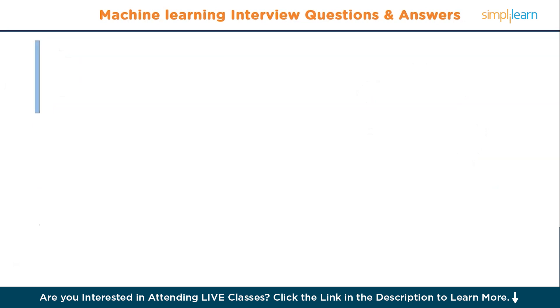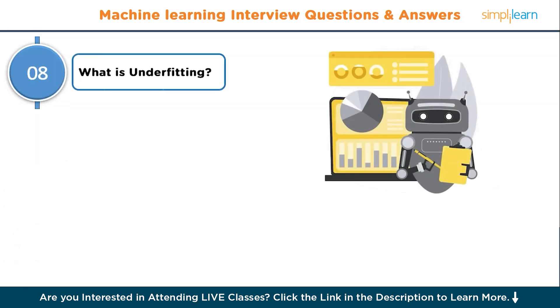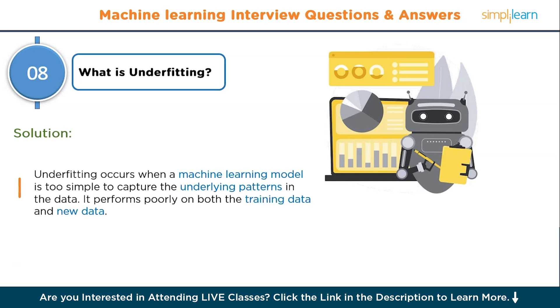Coming to question number eight: what is underfitting? Underfitting occurs when a machine learning model is too simple to capture the underlying patterns in the data. It performs poorly on both the training data and new data.